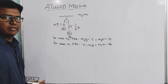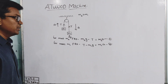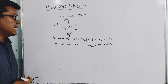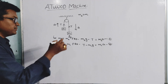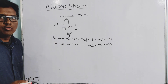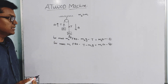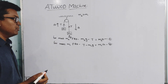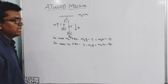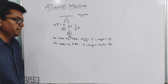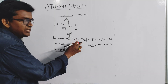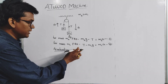By solving these two equations we can find the acceleration of the two blocks. Since both blocks are connected to the same string, they have the same magnitude of acceleration — one block moves vertically downward and the other vertically upward.